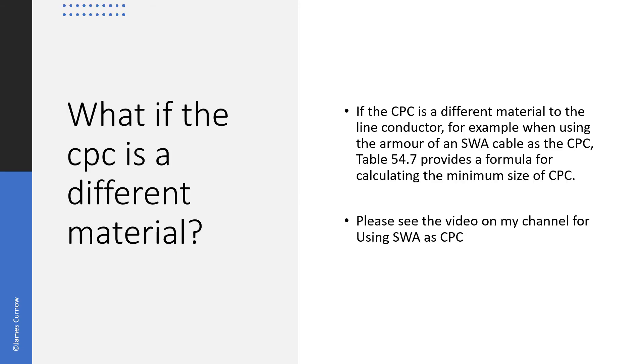What if the CPC is a different material to the line conductor? If the CPC is a different material, for example when using the armour of an SWA cable as a CPC, table 54.7 provides a formula for calculating the minimum size of CPC. If you'd be interested in hearing more about this, please see my video on using SWA as CPC.